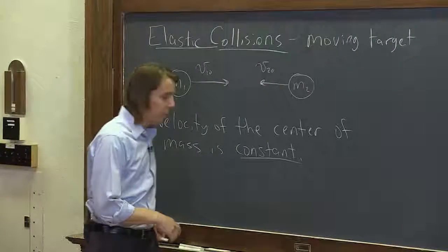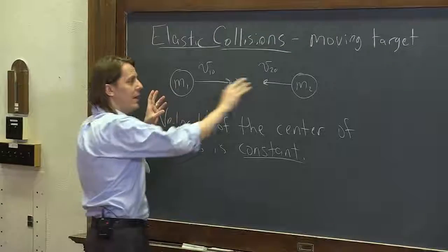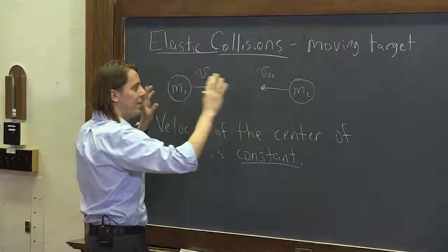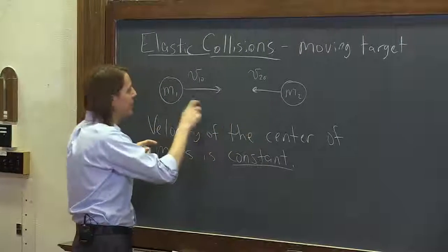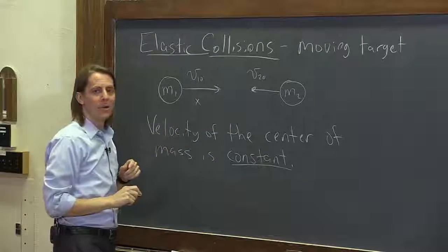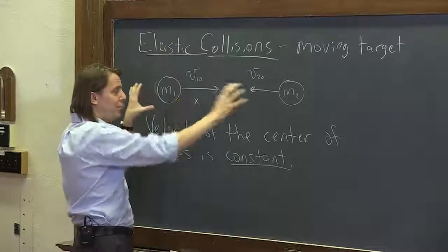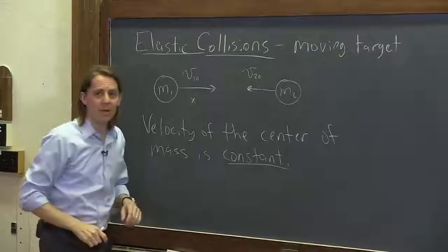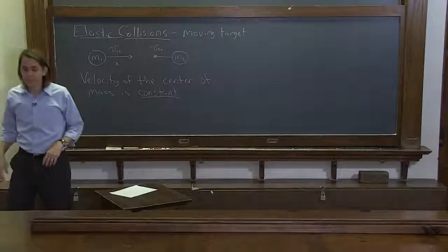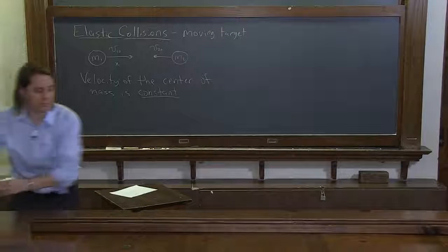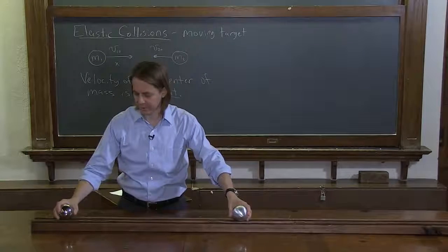I can show you that with Hal and Al. We'll have Hal over here, Al over here, push them together and have them collide. Remember, Hal weighs about three times more than Al, so the center of mass is going to be right there, closer to the heavier mass. As they move together, it's going to move to the right. So we'll ram them into each other and see what happens — let's keep our eye on the center of mass. Here we go.